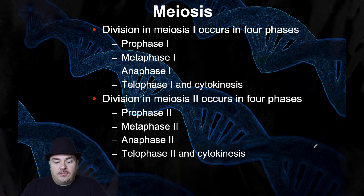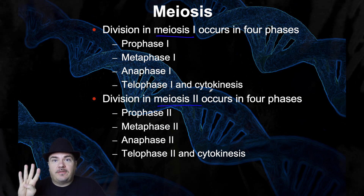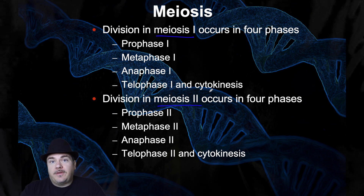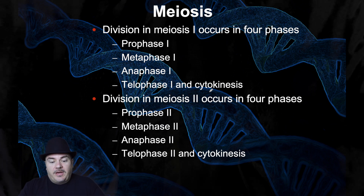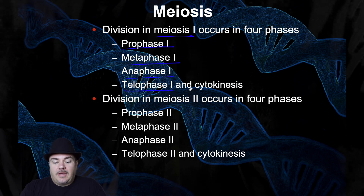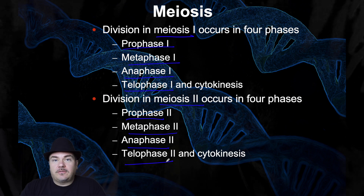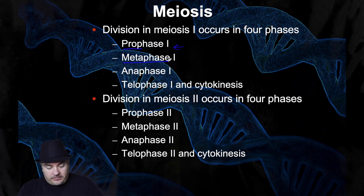Meiosis goes through two rounds of cell division: meiosis one and then meiosis two. Meiosis is made up of sub-phases with the same names as mitosis — prophase, metaphase, anaphase, telophase — except prometaphase is missing. In meiosis one, you have prophase one, metaphase one, anaphase one, telophase one. Then in meiosis two, exact same names but with a two: prophase two, metaphase two, anaphase two, telophase two.